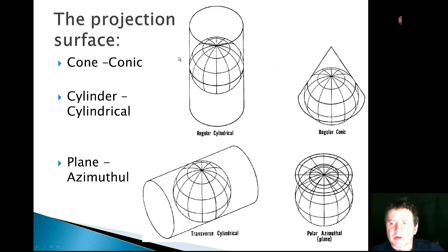So the surface. Cones, cylinders, and planes. So a conic section would be a cone that would make contact with the globe in one location or if we kind of pushed this cone down inside the Earth we'd be in contact with two parallels around the Earth.